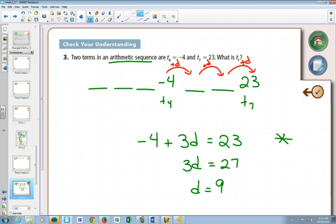This question asked us to find term one. If you know that you're adding nine every single time, some of you will just say, well, if I'm adding nine going to the right, if I want to start at negative four and go to the left, I'd have to subtract nine.